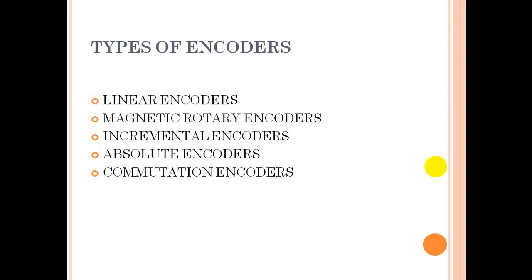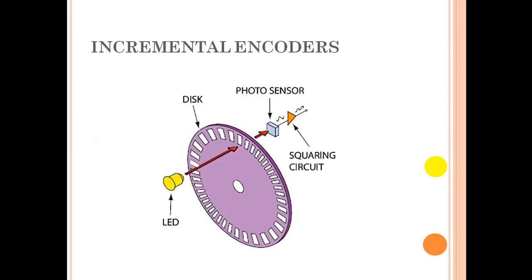The basic principle of an incremental encoder: there's a light source, which is an LED in general, and a photo sensor (optical sensor). Between them there is a perforated disc which is connected to the shaft of the motor.